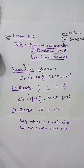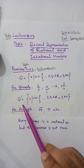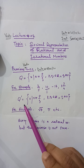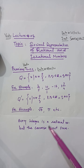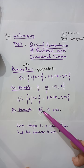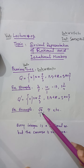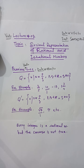Irrational numbers are those which cannot be written in the form p/q. Pi, which is the ratio of the circumference of a circle to the diameter, is also an irrational number. We will discuss the decimal representation of rational and irrational numbers in detail in this video lecture.